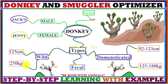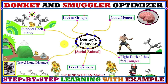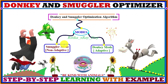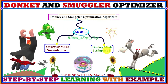The Donkey and Smuggler Optimization Algorithm provides the best results in comparison with existing metaheuristic optimization algorithms. Since this algorithm is inspired by the donkey's searching behavior in real life, there are two important modes used in this algorithm: donkey mode and smuggler mode.